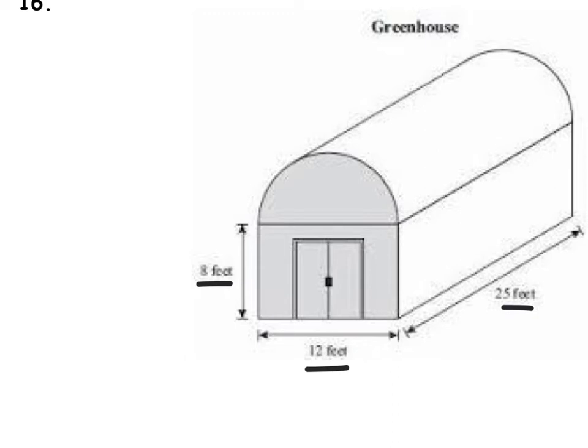And we have two shapes. We have a rectangular prism, and then we have a half circle of a cylinder, a half cylinder.